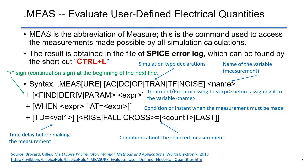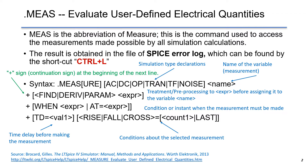You can retrieve the log file by the shortcut key CTRL+L. The Spice syntax is as follows. Note that the plus sign in Spice syntax is a continuation sign at the beginning of the next line. The syntax starts with .MEAS, followed by the simulation type declarations and the name of the variable. The second line gives preprocessing as an expression, which is a measurement. The third line is a condition or instant as a measurement. The last line is a time delay and any condition about the selected measurements.